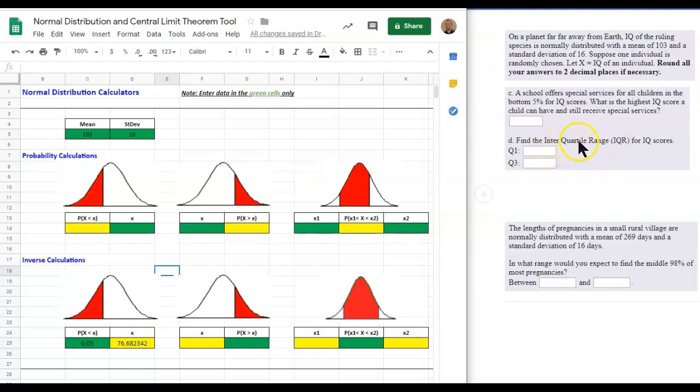Now we want to find the interquartile range. Actually, in this case, we just want to find Q1 and Q3. I cut off the last part. We don't actually care about the IQR. You can find that on your own. So Q1 and Q3. Q1 is defined as the 25th percentile. And that would be 0.25. So the 25th percentile would be located at 92. Remember, to round to two decimals, 92.21.